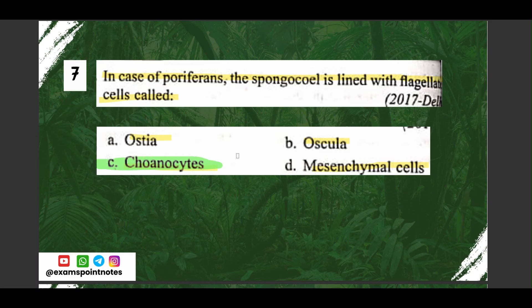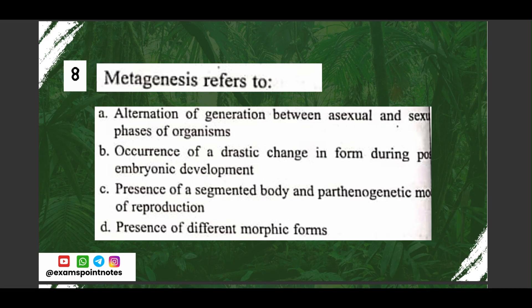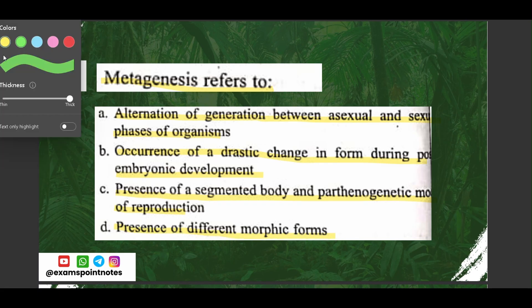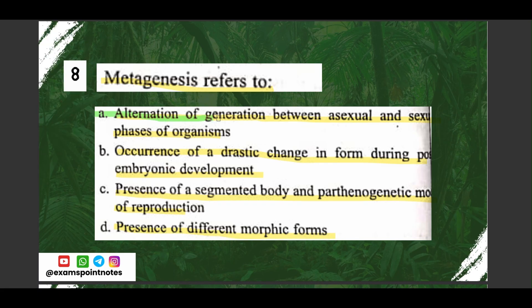Question number eight: metagenesis refers to — options are: A) alternation of generation between asexual and sexual phases of an organism, B) occurrence of a drastic change in form during post-embryonic development, C) presence of a segmented body or parthenogenetic mode of reproduction, D) presence of different morphic forms. The correct option is option A, alternation of generation between asexual and sexual phases.